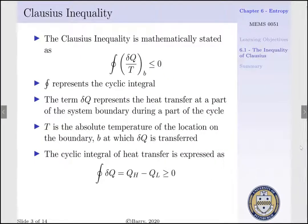First, to begin, the Clausius inequality is mathematically stated as the cyclic integral of delta Q per T, evaluated at our boundary, has to be less than or equal to zero. The integral symbol with a circle represents our cyclic integral, as introduced when we talked about work. Delta Q represents the heat transfer at a part of our system boundary during part of our cycle. T is the absolute temperature of the location on the boundary at which our heat is transferred.